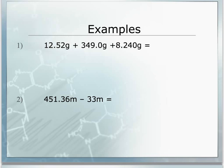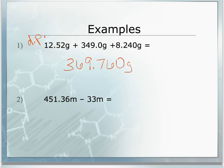Let's go through a few examples. In the first problem we have an addition problem, so we're going to look at decimal places. When we put 12.52 plus 49.0 plus 8.240 grams into our calculator, we get the answer 369.760 grams. This is not accurate because we do not have three decimal places in all measurements. The first has two decimal places, the second has one, and the third has three. So our smallest value is one decimal place.